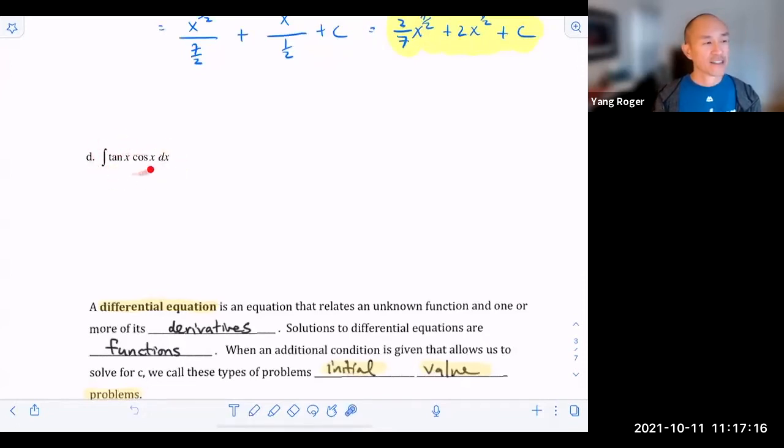This is not a single trig function. So I'm not really sure how to find the antiderivative of this. Does anybody have any advice for me? How to find the antiderivative of tangent x times cosine of x? Any advice? Anyone here good at trig?